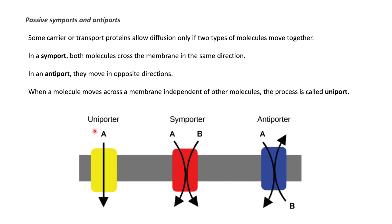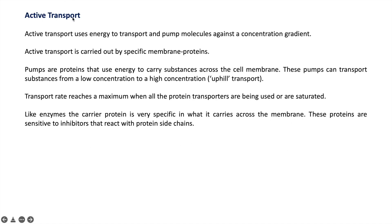The next transport mechanism is active transport. Active transport uses energy for the transportation of molecules from low concentration to higher concentration. To move substances against the concentration gradient, a pump is required. In plants, these pumps are specific membrane proteins that bind with a substance and move it from low concentration to high concentration, which is called uphill transportation.